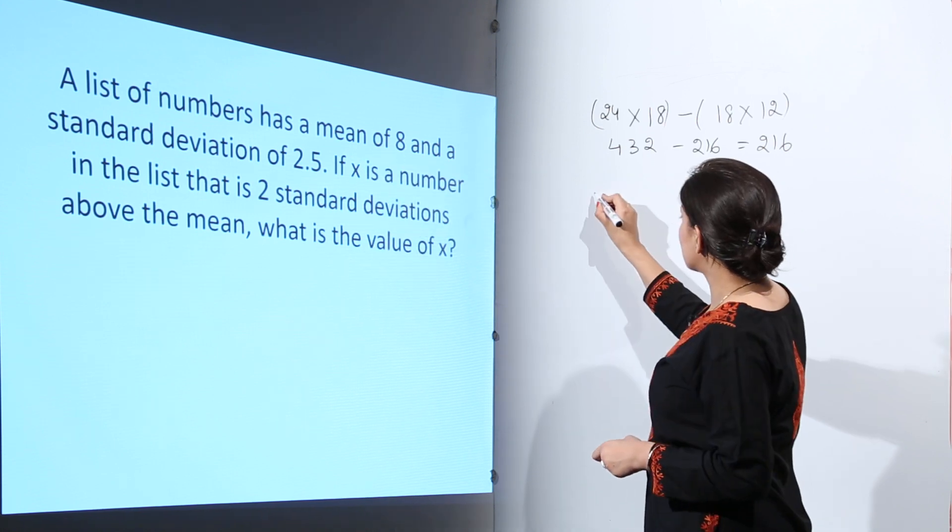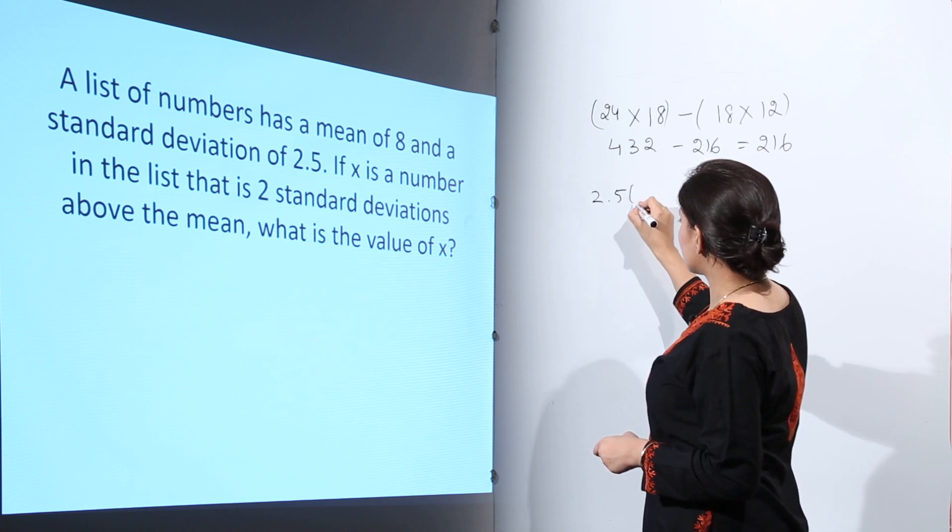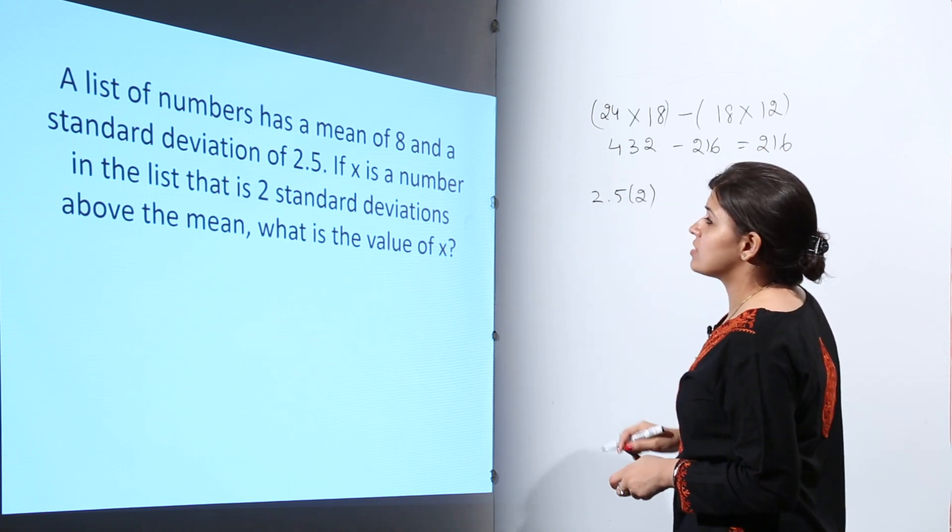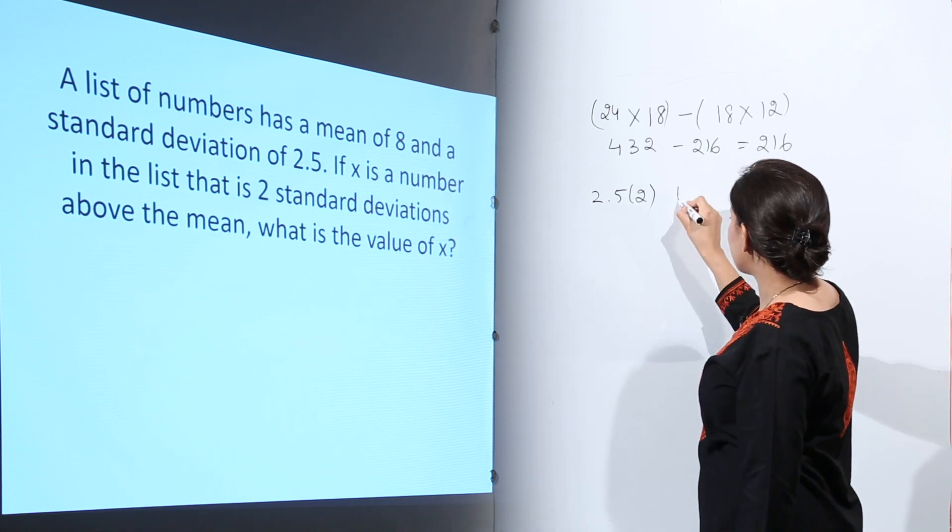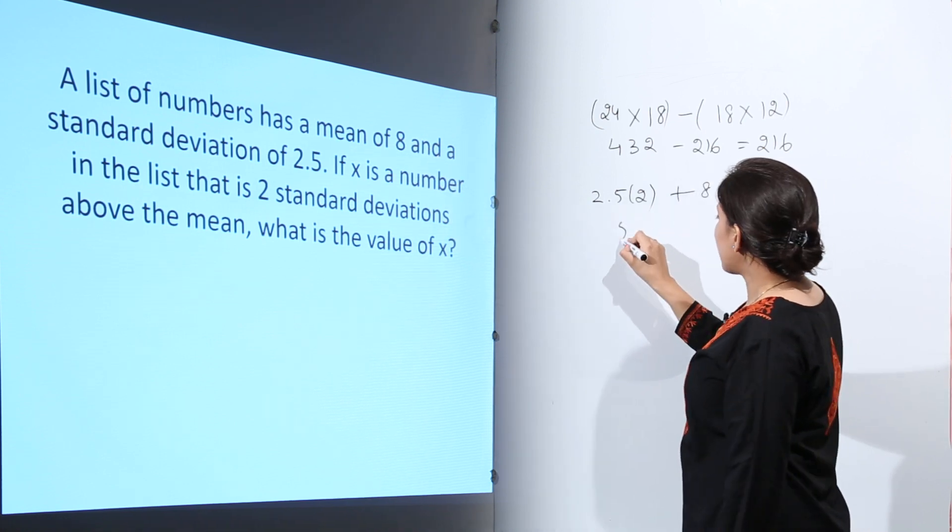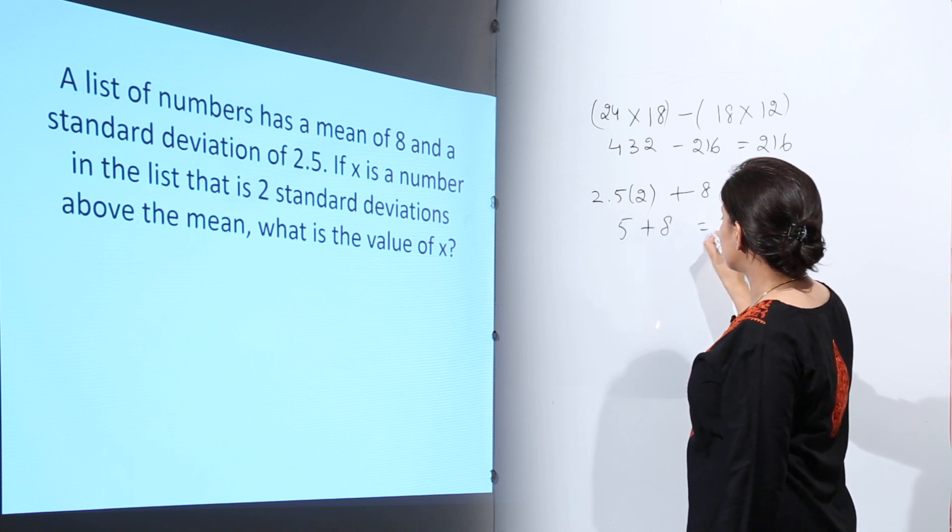So two standard deviations will be 2.5 into 2, and because this number is above the mean, we will add 8. 5 plus 8 gives us a value of 13.